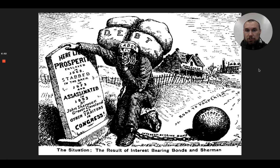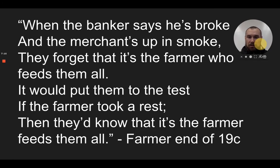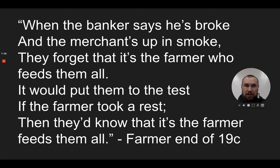The imagery of the time captures this well: a cartoon showing the debt on laborers, the mortgages, having to sell their homes — 'Here lies prosperity, enslaved in 1863, stabbed in the back in 1873, and assassinated in 1893,' talking about those depressions and recessions. And one of the sayings was: 'When the banker says he's broke and the merchant's up in smoke, they forgot that it's the farmer who feeds them all. If the farmer took a rest, they'd be put to the test — it's the farmer that feeds them all.' The idea that we cannot go on without the farmer, the backbone of the United States.